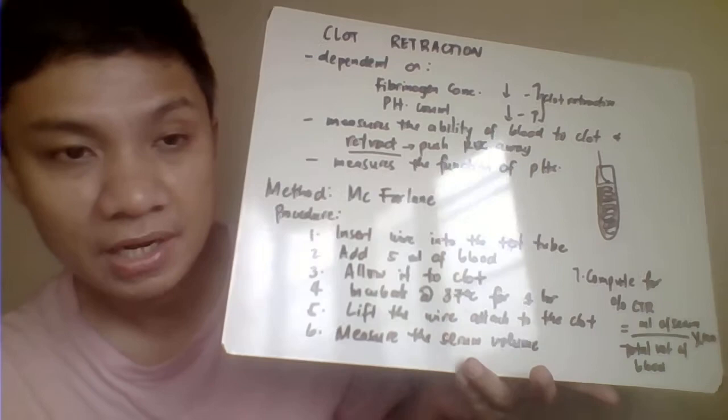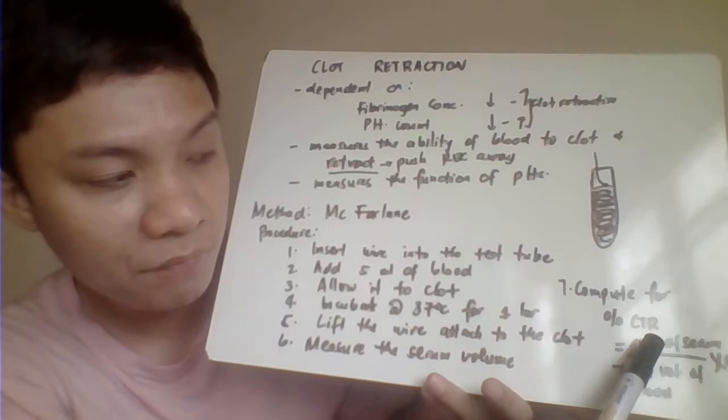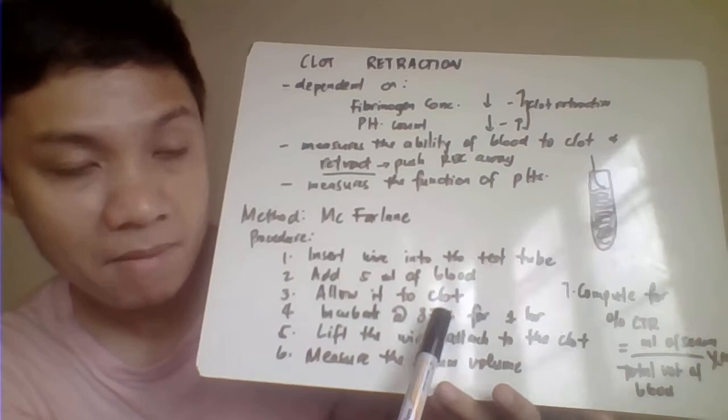Then compute for the percentage of your clot retraction. The percentage of clot retraction is measured as the volume of serum over the volume of blood used. Since we're using 5 ml, it's over 5 times 100.